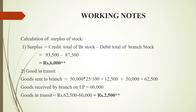We have to find the branch stock account first — specifically the surplus or shortage of stock. We find out the credit side total and debit side total. The credit side total is 93,500 and the debit side total is 87,500, so the balance is 6,000 — this is the surplus.